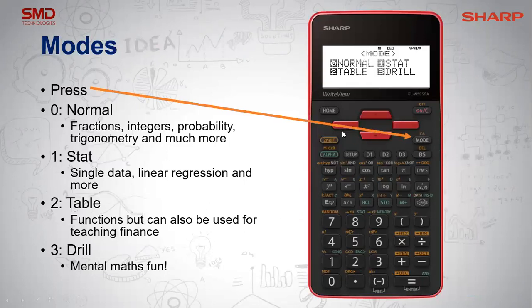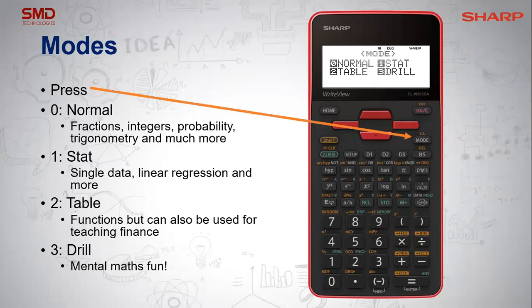So, modes. You've got normal, which does things like fractions, interest, probability, trig — all your basics. I'll show you a shortcut for your class marks as well, which is really handy. Then of course stats, which I'll show you very quickly — it's so easy. Then we have table, where you can plug in a function. I want to show you how to apply it to factorizing, as well as finance — we'll actually do a present value annuity using the table mode today. And then of course you have drill.